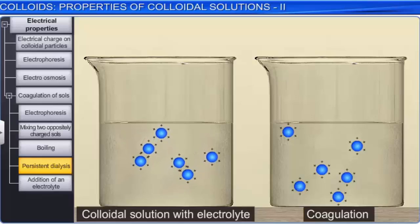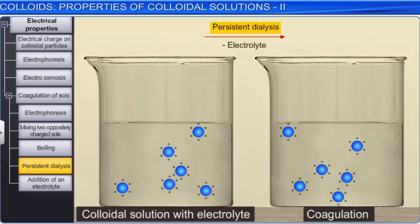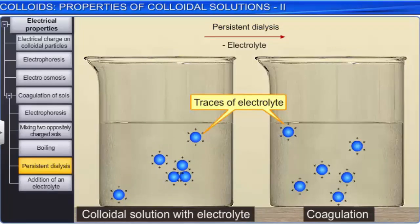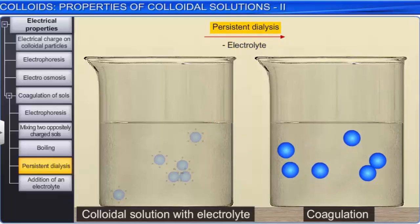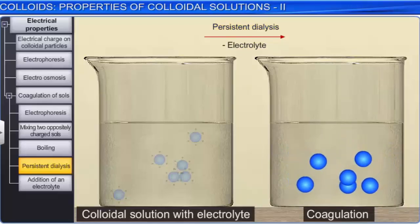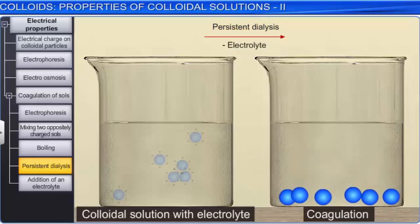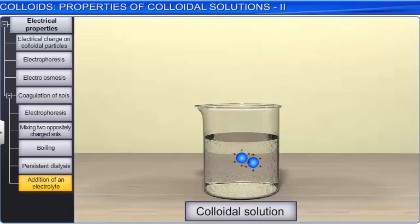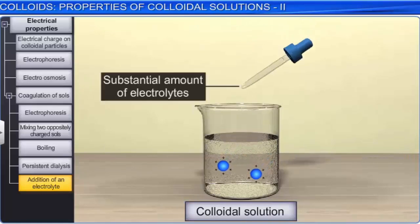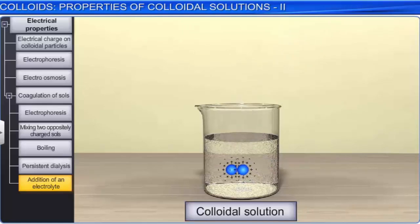The coagulation of a sol can also be brought about by persistent dialysis. Traces of electrolytes are essential for the stability of colloids, as they get absorbed on the surface of colloidal particles giving them charge. If the electrolyte is removed completely by persistent dialysis, then the colloidal solution would become unstable and undergo coagulation. The most important and useful method of coagulating salts is by adding an electrolyte. While traces of electrolytes are essential for stability, adding substantial amounts brings about the precipitation of colloids as it completely neutralizes the charge on the colloidal particles.